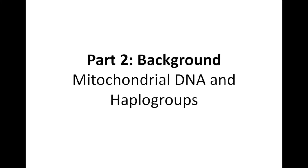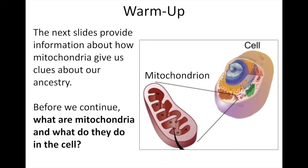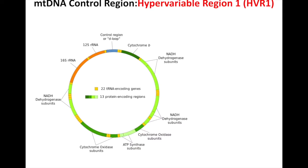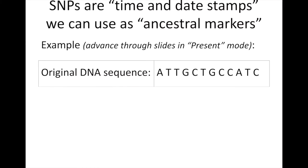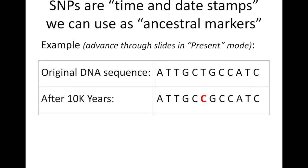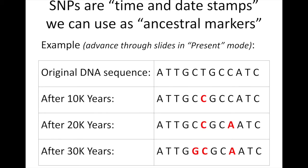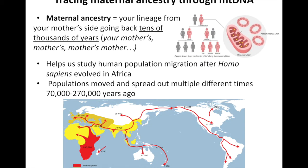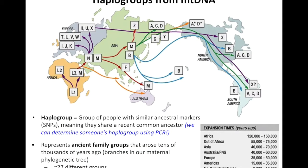In Part 2, we share the unique features of mitochondrial DNA that reveal so much about our human ancestry. You can differentiate this content as makes sense for your students. Single nucleotide polymorphisms, or SNPs, are introduced, as is how they can be used as time and date stamps to establish haplogroups as a means of tracking the migration of our deep maternal ancestors.